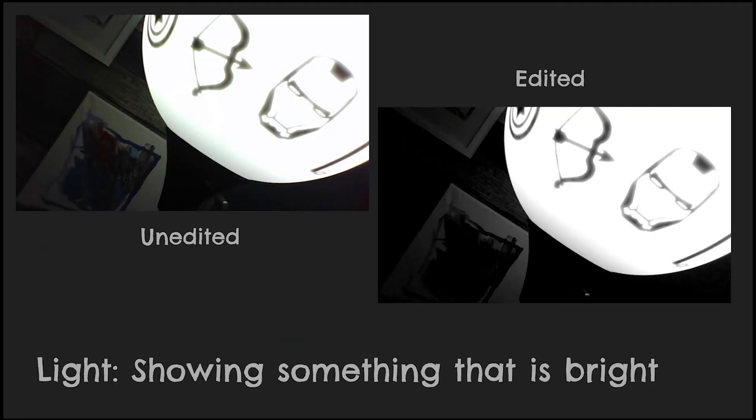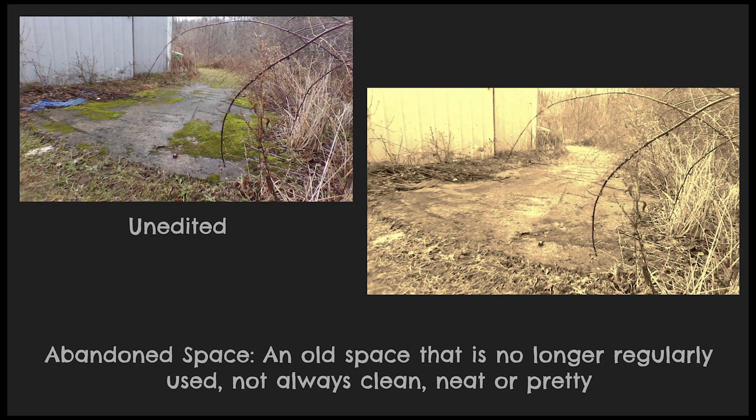Light is when you are showing something that is bright. Here you can see a lamp that I created using my Cricut at home to make a Marvel lamp in our house. For this photograph, I shot an abandoned space. An abandoned space is an old space that is no longer regularly used — it's not always clean, neat, or pretty. Here you can see a barn that we have in our backyard that we don't keep up very well, and I wanted to give it an old, creepy kind of vibe, so I edited my photo to look just like that.